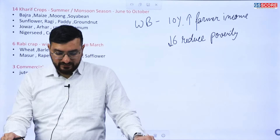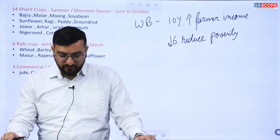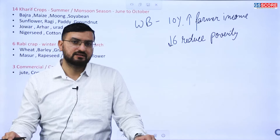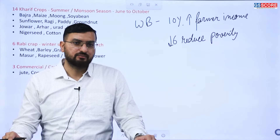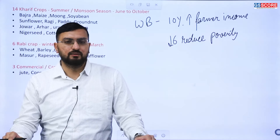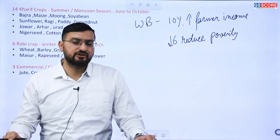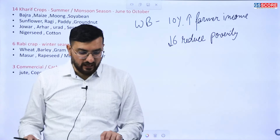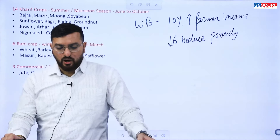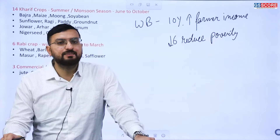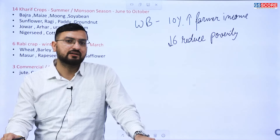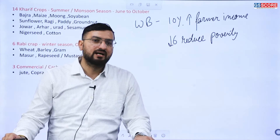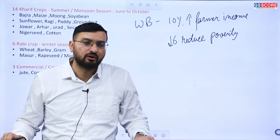The primary beneficiaries of MSP are farmers, mostly small and marginal farmers. Regarding how MSP is determined, there is a formula: A2 plus FL. This forms the basis of cost calculation used by the government to set the minimum support price.